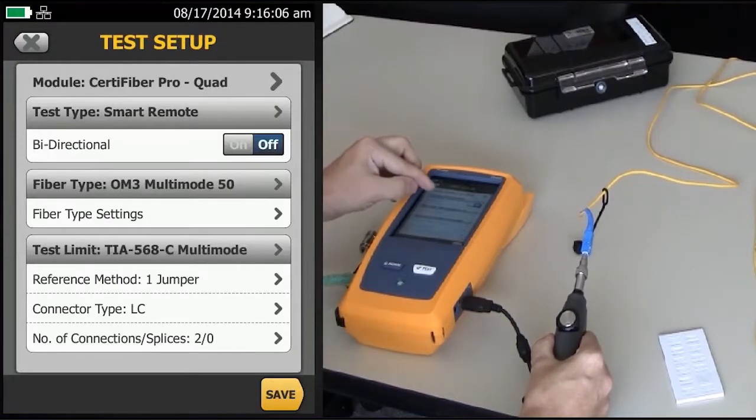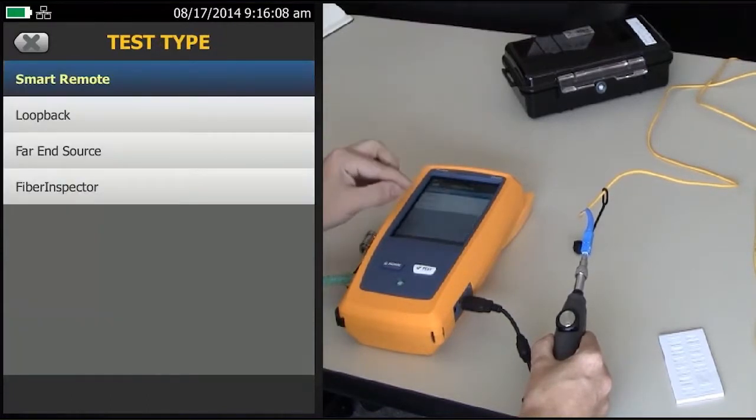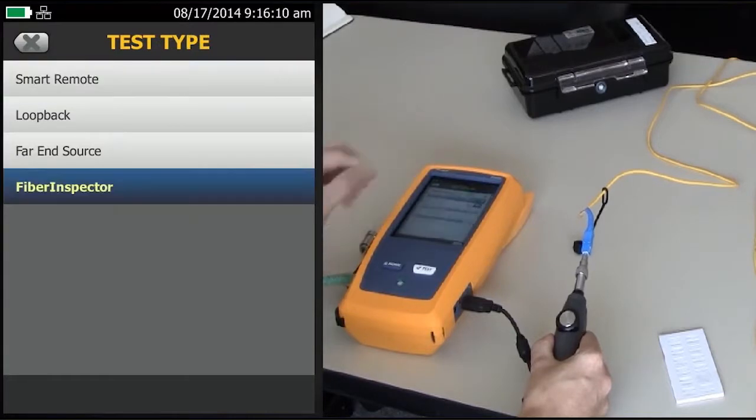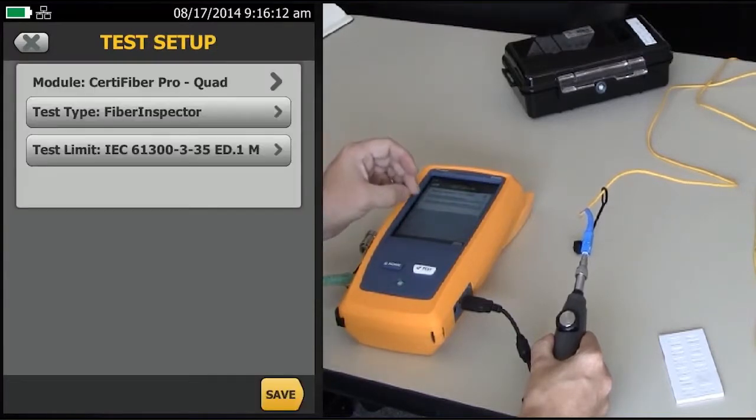We see Test Type. If I tap Test Type, Fiber Inspector, it will give me the test limit for multi-mode. Well, this is single mode, so I need to change it.